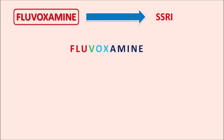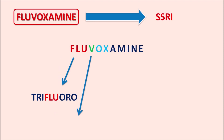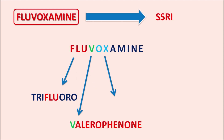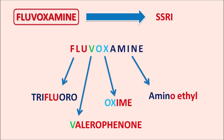Within the name of this drug we can find some structural information. The prefix 'flu' indicates this drug has a trifluoromethyl group. The second term 'v' indicates it has a valerophenone structure. This trifluoromethyl group is attached to valerophenone at the para position. The term 'ox' indicates this drug is an oxime derivative.